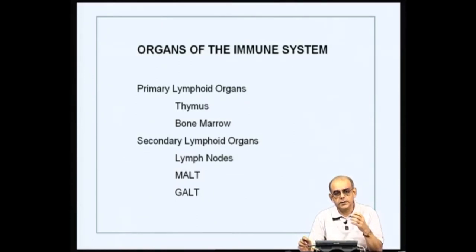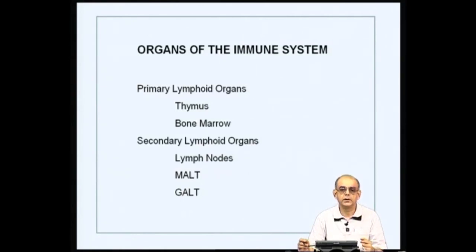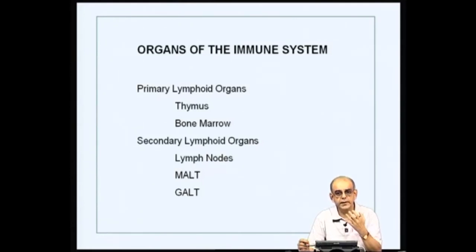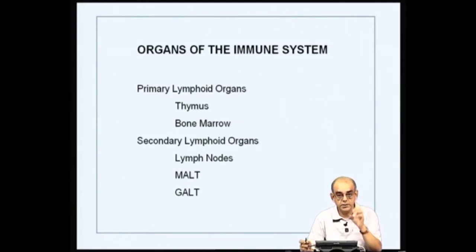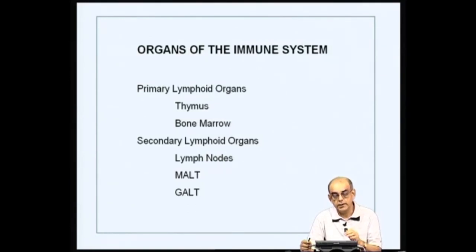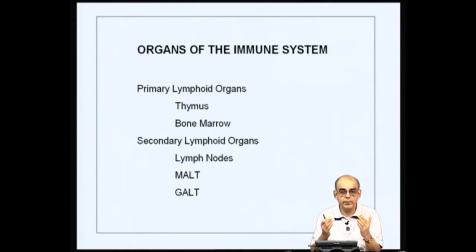The gut is one of the very important locations constantly bombarded with microorganisms — pathogenic or non-pathogenic — because food always contains some sort of bacteria. Whether they get across the intestine depends on the gut associated lymphoid tissue, which has a very important and unique way of blocking these pathogens. We need to learn how these secondary lymphoid organs actually function.